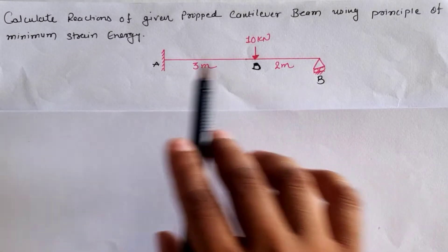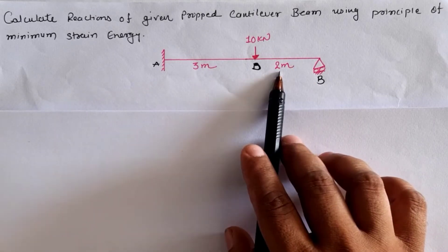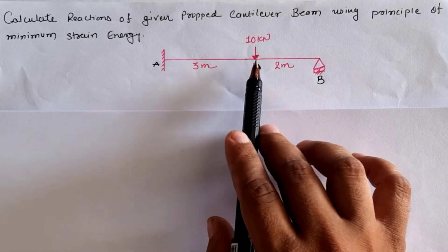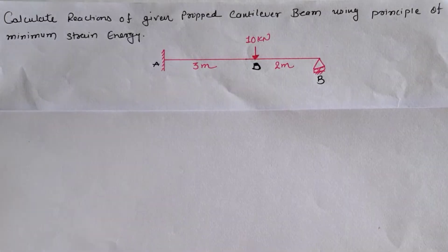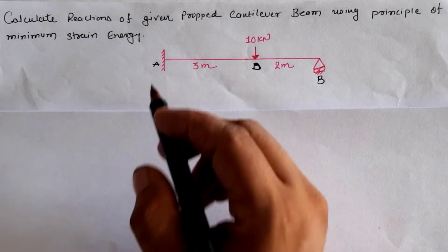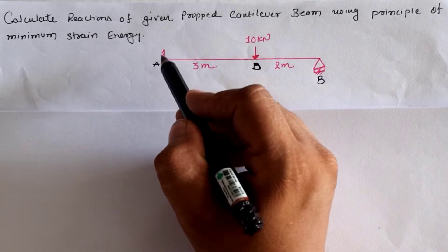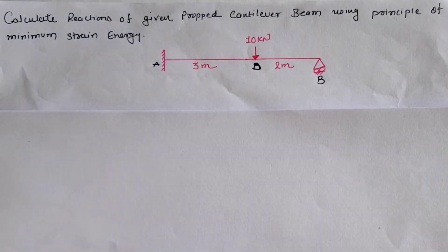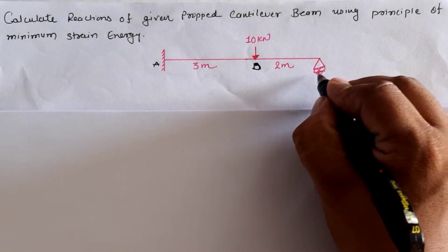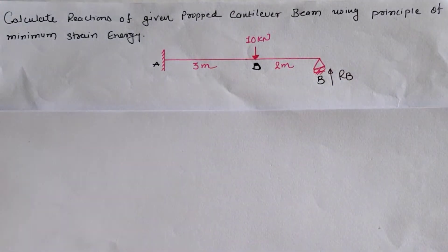Observing the given beam, we have a propped cantilever beam of span AD = 3 meters and DB = 2 meters. At location D, a 10 kN downward load is given. According to the energy principle, we have to select one redundant, which is either RA, the anticlockwise moment MA, or RB. We assume that the support reaction RB is treated as the redundant force.